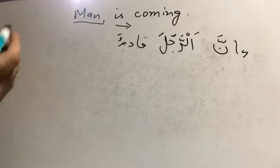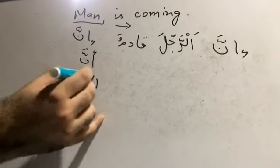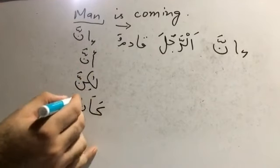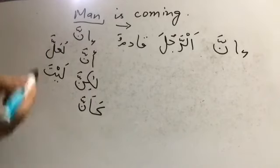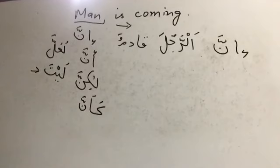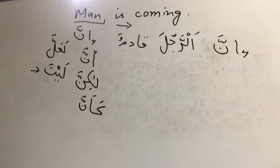Inna is actually part of a family of six: inna, anna, lakinna, ka'anna, la'alla, and la'ita. All of them have shadda except one. Whenever any of these come in front of a nominal sentence, they put the subject into the accusative case, and that subject becomes ismu inna, and the predicate becomes khabaru inna. We will study the details in future, but whenever you find inna, it will put the subject into the accusative case — the case is nasp, that is mansoob or accusative.